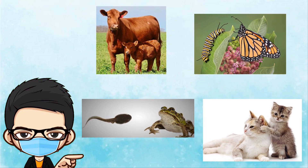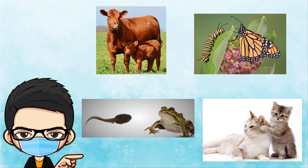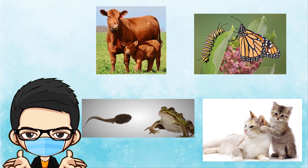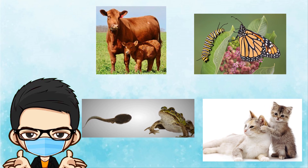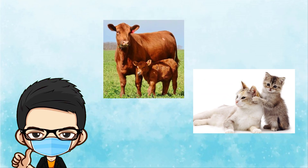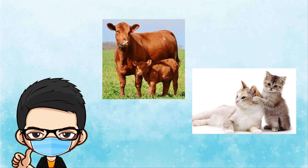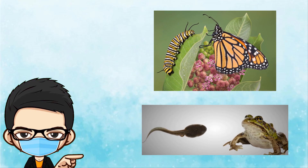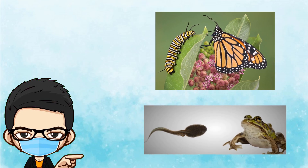Now look at these animals. Can you point out which animals' young may look similar to their parents? Wow, you did really great! This calf and kitten look similar to their parents. However, others may not look like their parents because their body parts have changed.